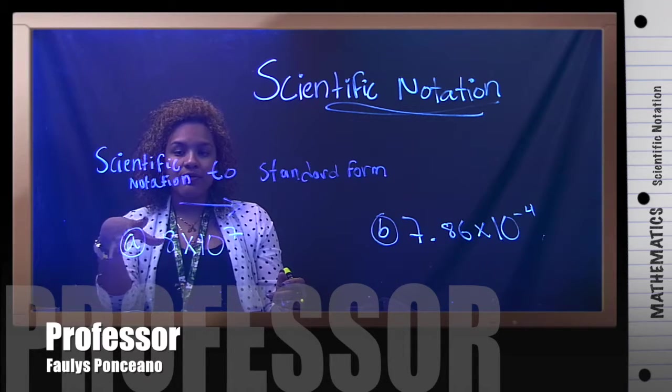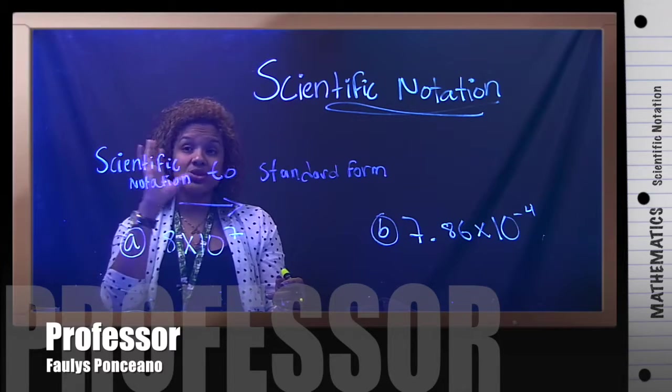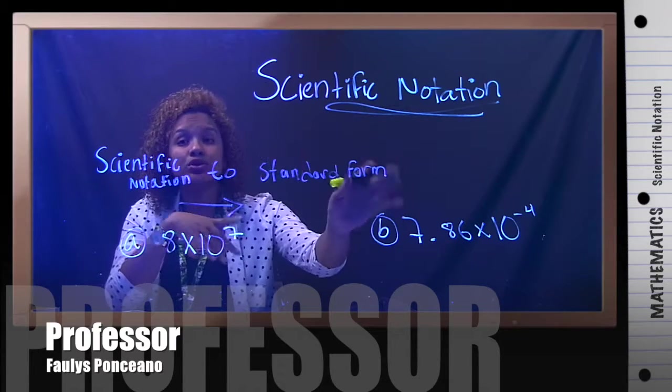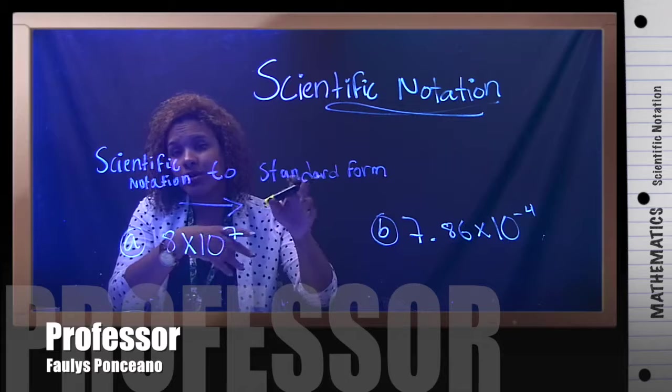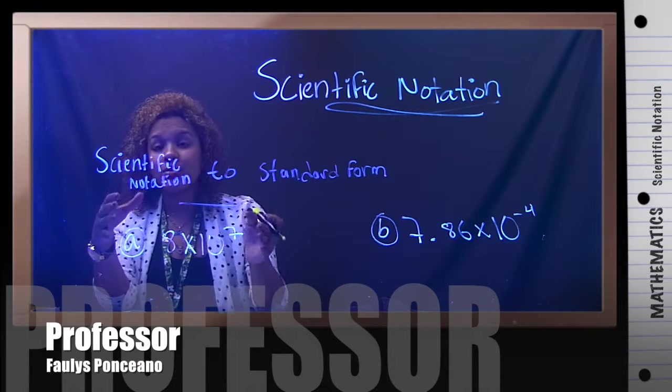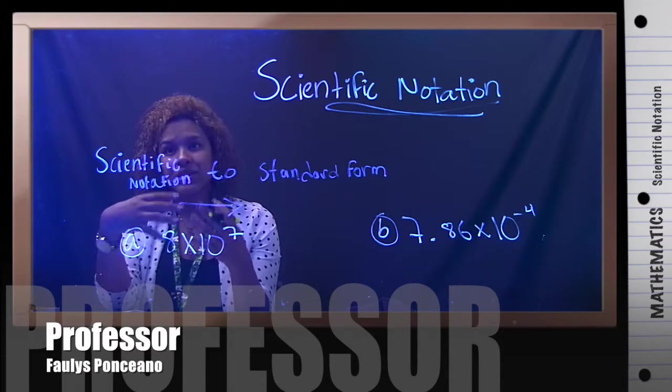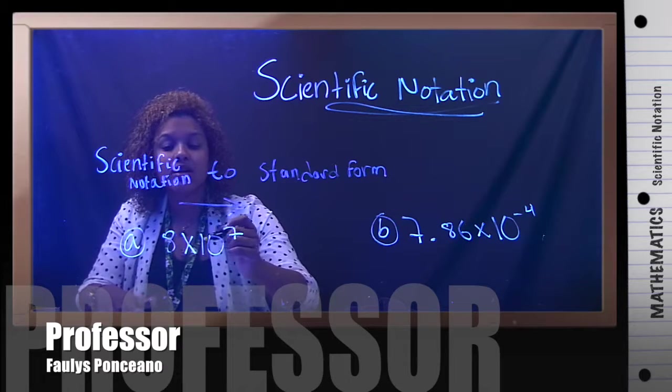So, if I were to have, first we're going to go from scientific to standard form. Standard form is how we usually have the number, very big or very small. Scientific is how we rewrite it, so it's shorter, easier way to rewrite.